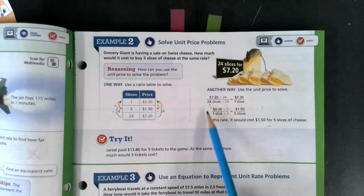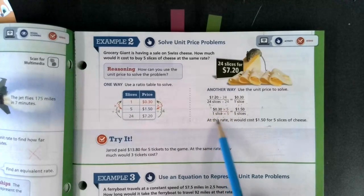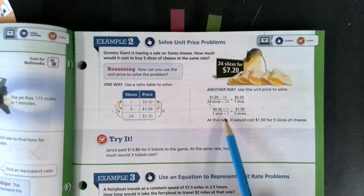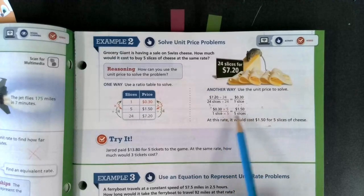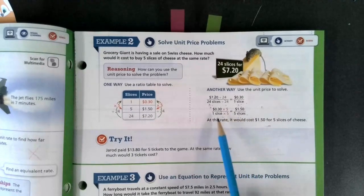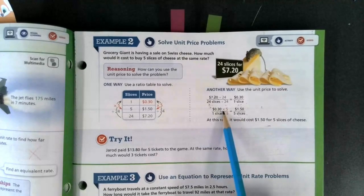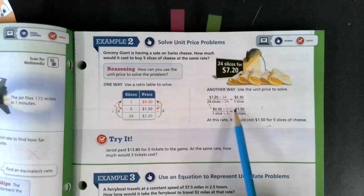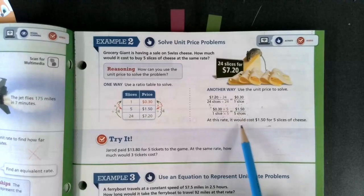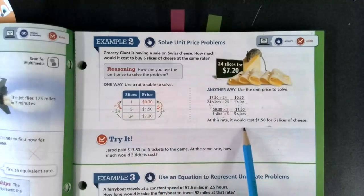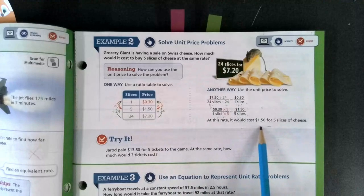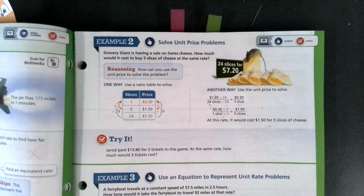If I use that same unit rate now, I can use it to help solve how much five slices would cost by setting it up equal to five slices. I know one times five will get me to five. So I'm doing the same thing on top. 30 cents times five is $1.50. So at the same unit rate, it would cost $1.50 for five slices of cheese.